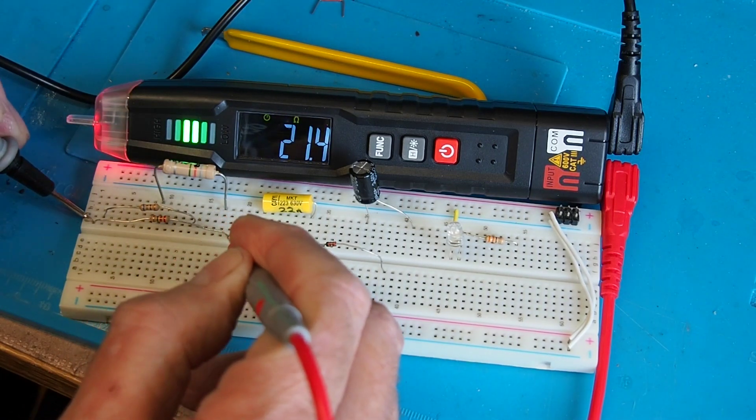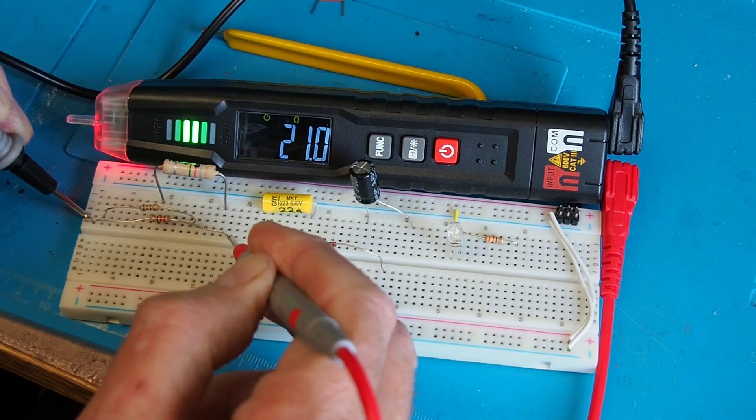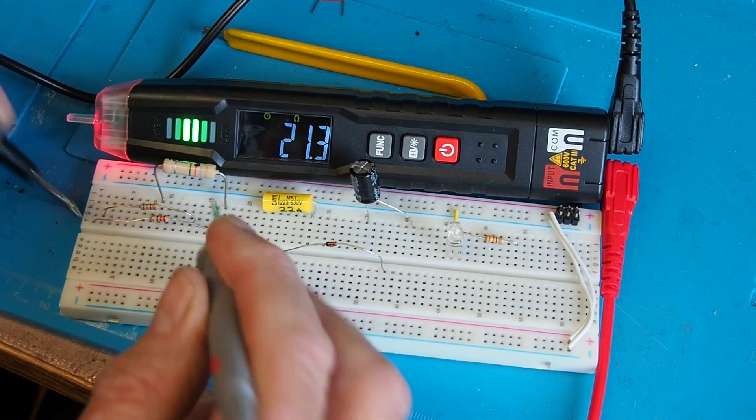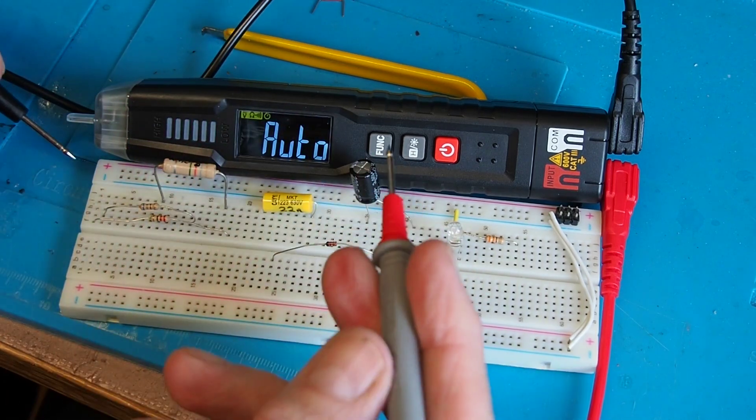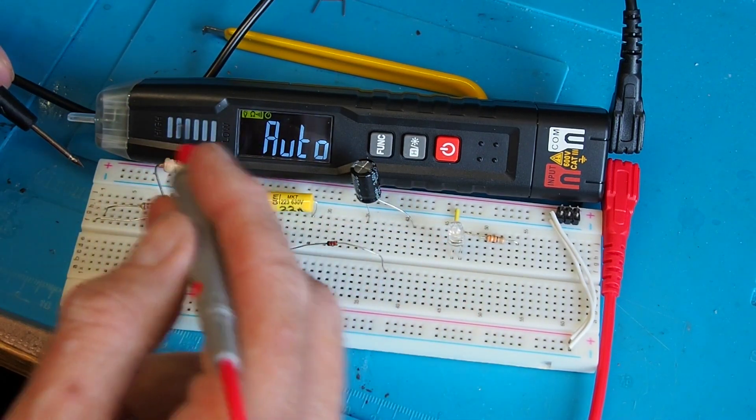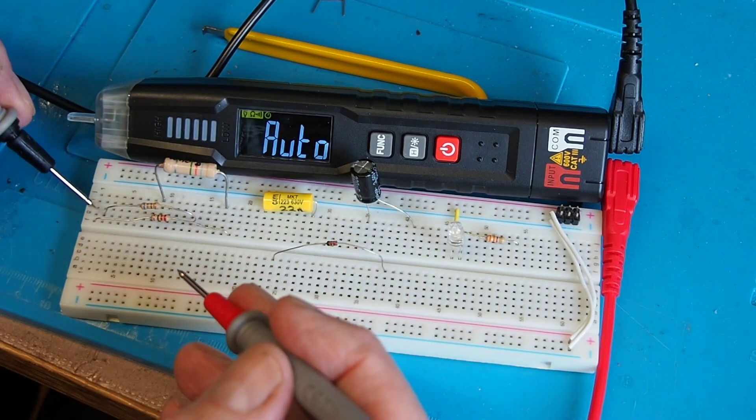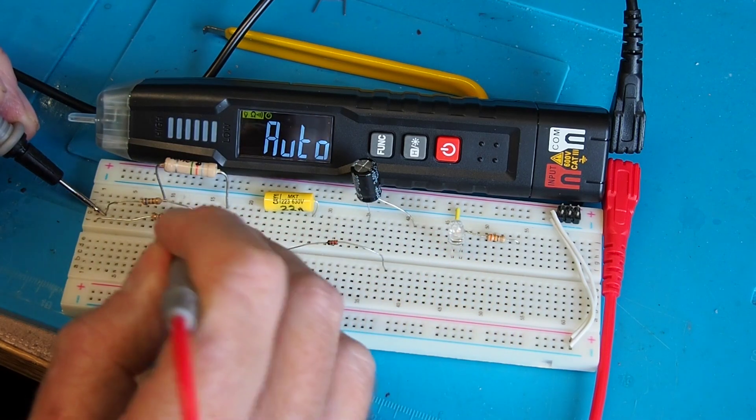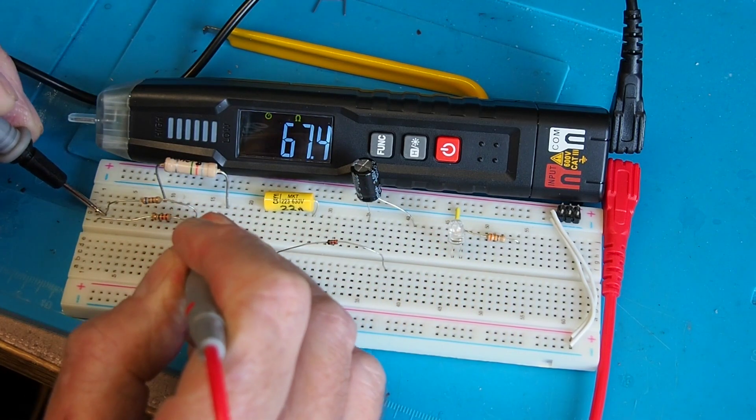Down at this end, this is a 22 ohm resistor showing us 21.2 there, 21.1. Because it's part of the continuity circuit you've also got the alarm sounding and the green light coming on. That only occurs up to 50 ohms.